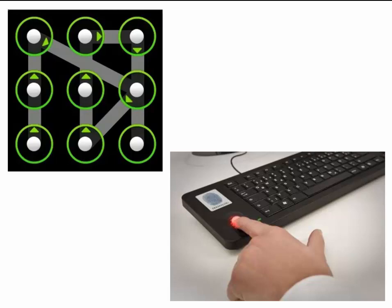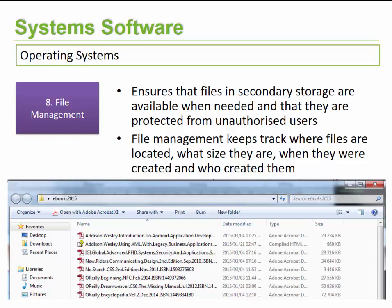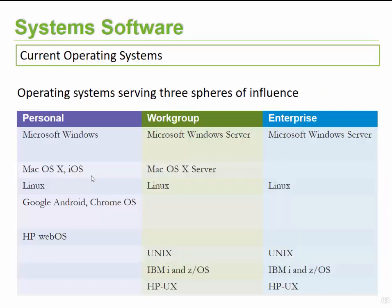File management in the operating system manages files whenever you save files or install software. A file management tool tracks where files are located, their size, who created them, and when they were created. For example, in Windows Explorer you can go into a specific folder and it shows you the files within, the date modified and created, the file type, the size, and additional attributes you can configure.